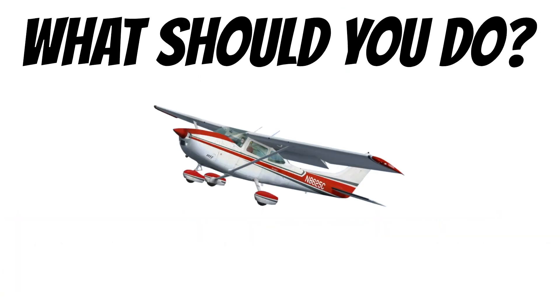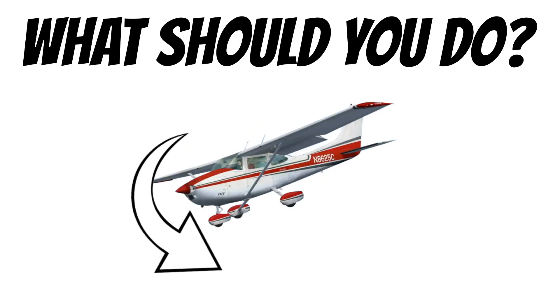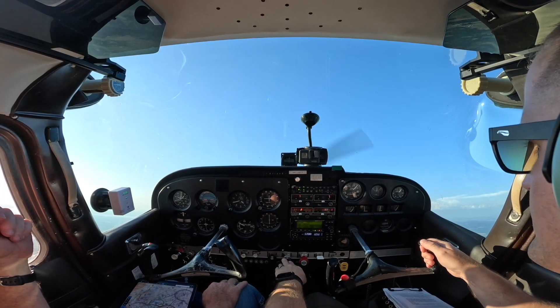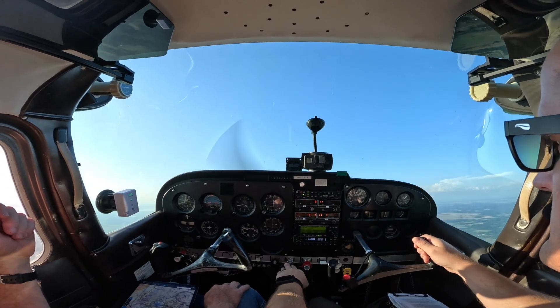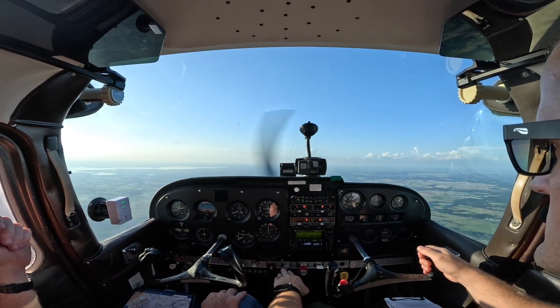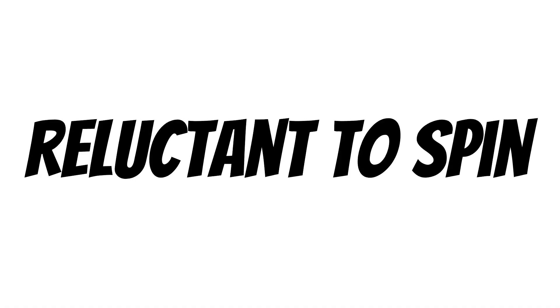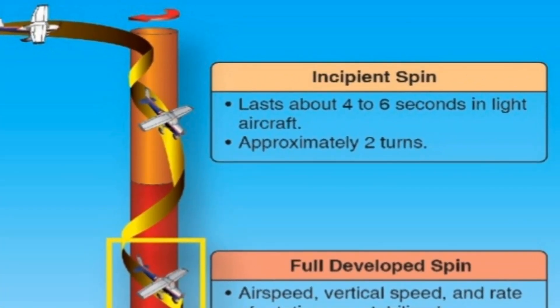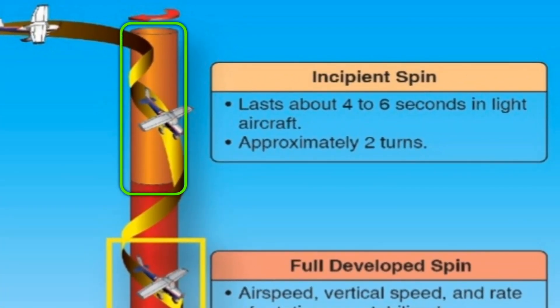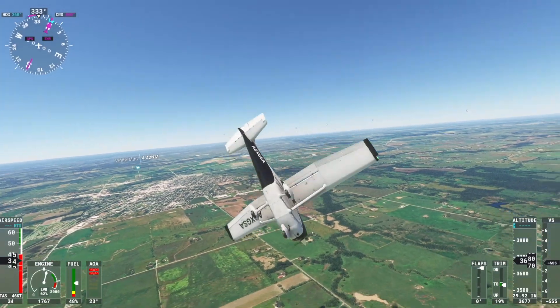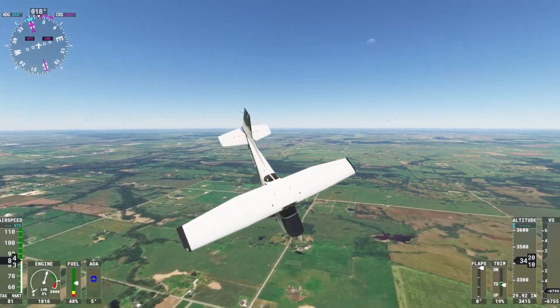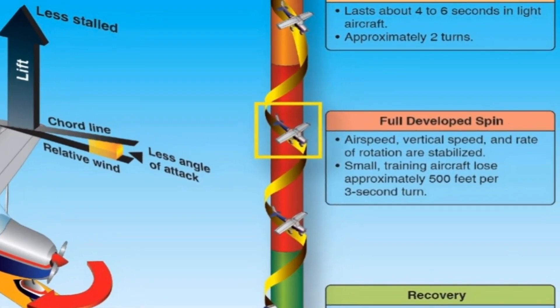That raises an important question: what should you do if you think the airplane is about to spin? It hasn't started spinning yet, but the airplane has stalled and one of the wings has dropped. If you said the old PARE acronym, you're wrong — we have to break the stall first. Always, always break the stall first. 99.9% of the time, if you're quick to break the stall, the airplane won't even begin to spin, especially if you're flying a newer aircraft. Newer airplanes are designed so that they're reluctant to spin. And even if you do start to spin, breaking the stall during the incipient phase is going to allow you to recover in most cases.